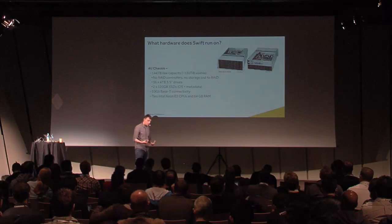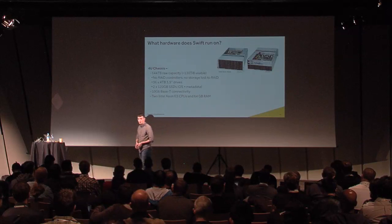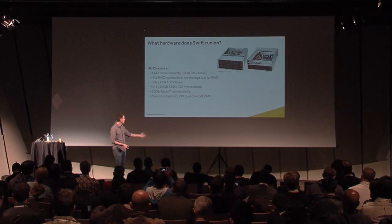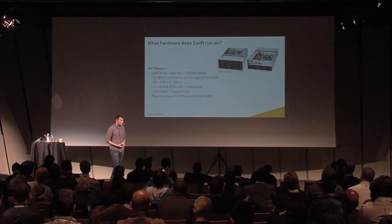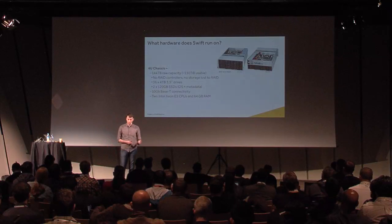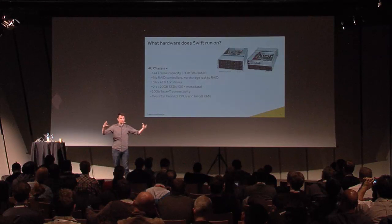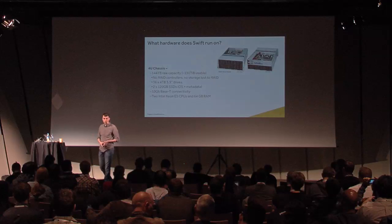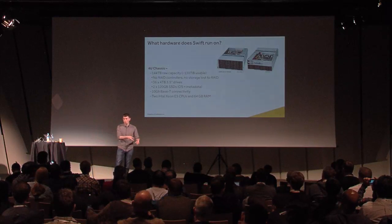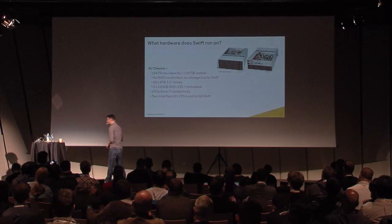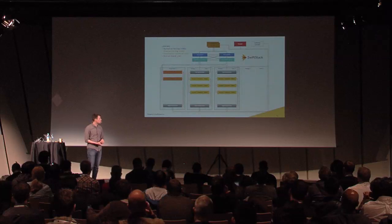For a larger or more dense setup, you could go for a 4U JBOD or something like that — things from Silicon Mechanics and those sorts of vendors. You don't have to buy giant proprietary pieces of hardware to run Swift. If your preferred vendor is vendor X, you can use vendor X, and that's okay.